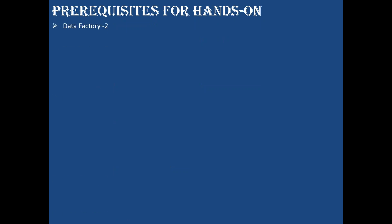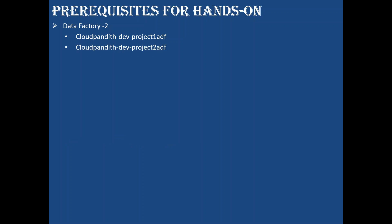Prerequisites: we need two data factories — one for Project 1 ADF and another for Project 2 ADF. Imagine you are working for a client with operations in Japan and Latin America. There is master data in Latin America that needs to be loaded into the cloud. Due to some issue the data is not loaded, so we can create a dependency where we call the pipeline in Project 2 ADF from Project 1 ADF to load that master data.